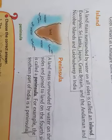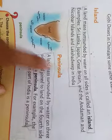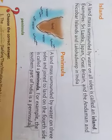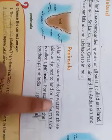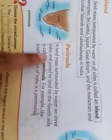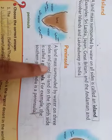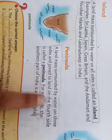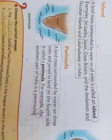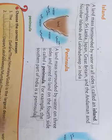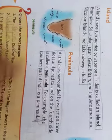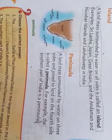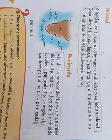The next landform is Peninsula. What is a Peninsula? A landmass surrounded by water on three sides and one side is land is called a Peninsula. Example: our India. Our India is a Peninsula.